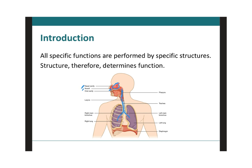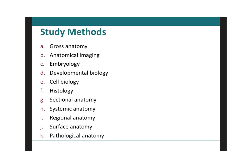The link between structure and function is always present, but sometimes it's not well understood. For example, the superficial anatomy of the heart was clearly described in the 15th century, but almost 200 years passed before the pumping action of the heart was actually demonstrated. On the other hand, there are also many important cell functions that were recognized decades before we had electron microscopes to reveal the anatomical basis for those functions.